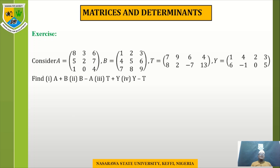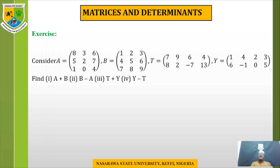Looking at the exercises: consider matrix A, matrix B, matrix D, and matrix Y as given. The first question is to find A plus B — we can add them because they have the same order. The second question is B minus A — note that B comes first, then minus A. Apply the same approach to the other exercise questions.